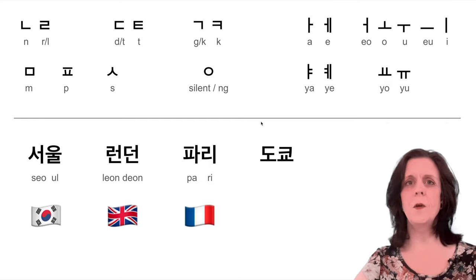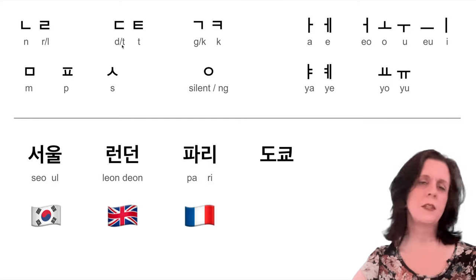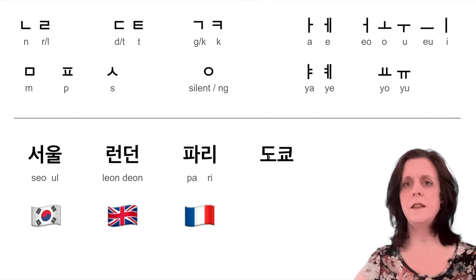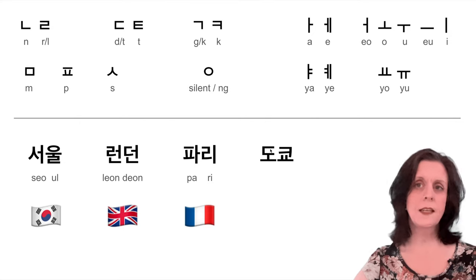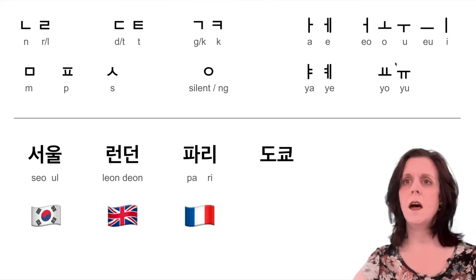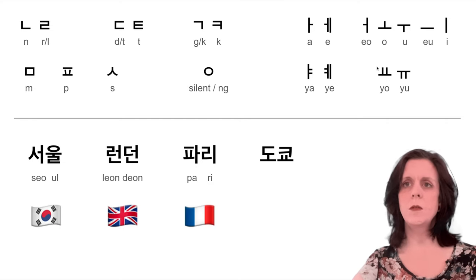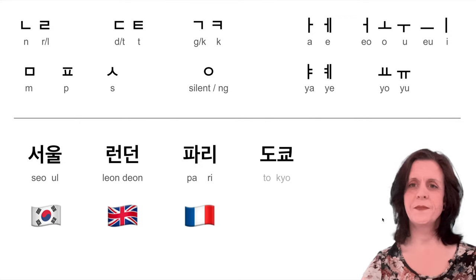Now we have — I need to say the D can sometimes sound like a T, so that's a T in this case. T-O, here's a K and a YO. So: Tokyo. Tokyo.